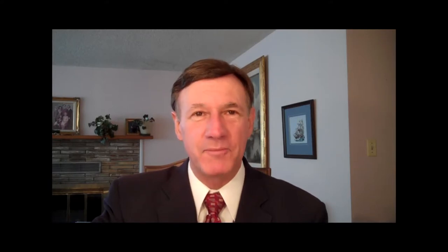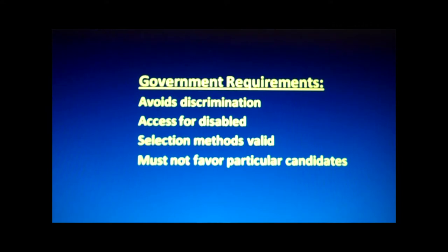Selecting the successful applicant is more involved than just choosing the first one you like best. Here's where the government comes in. Government has made major inroads into the hiring process. Organizations must now guarantee and prove that the process avoids discrimination, that persons with disabilities are given a fair chance to win the job, that selection methods are valid for job performance, and that testing scores may not be adjusted to favor any particular individual or groups of individuals.